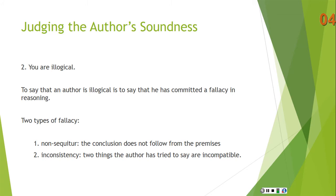You might also judge the soundness of an author's book by saying 'you are illogical.' To say that an author is illogical is to say that he has committed a fallacy in reasoning. Committing a fallacy in reasoning is not necessarily to be uninformed or misinformed — it's to use reason poorly. There are two types of fallacy: non-sequiturs and inconsistency. A non-sequitur is where the conclusion does not follow from the premises. A ridiculous example: 'The moon is round, therefore Donald Trump is president.' It doesn't follow from the moon being round that Donald Trump is president. You can see the conclusion doesn't follow.